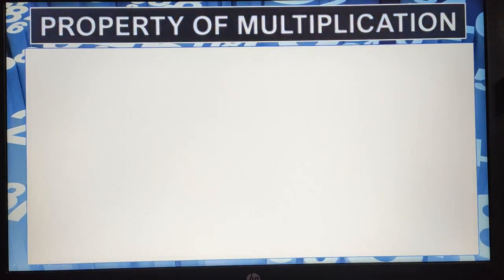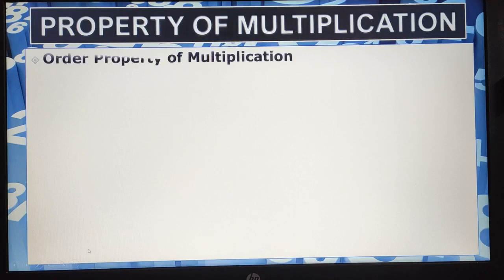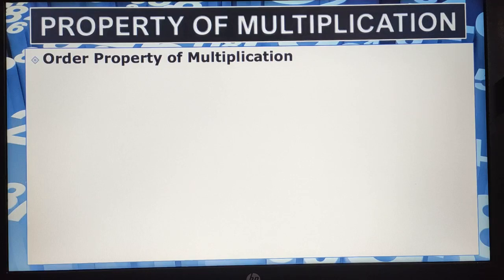There are some properties of multiplication which we see while doing multiplication. The first property is the order property of multiplication. By the name itself you can figure it out. Order means the sequence in which we place the factors — two numbers called factors can be placed in any sequence, but the product will remain the same.